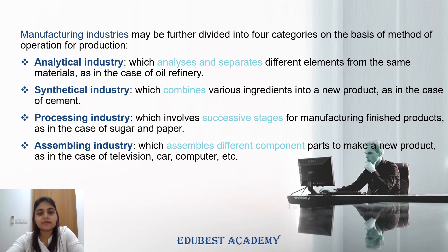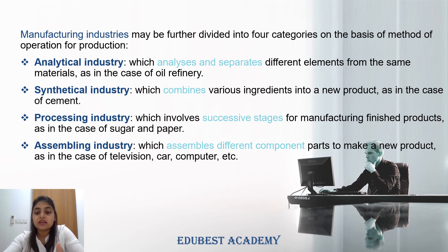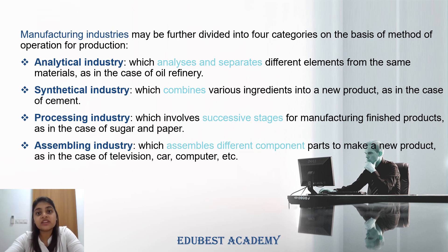The last one is assembling industry. In assembling industry, these people do not manufacture anything themselves — they take different components from different places, bring them together, and make a new product out of them. For example, television, car, computer. In a car, all the components are not made by one company — for instance, Honda's cars: the engine, steering, all these parts come from different places. Honda collects them, assembles them, and forms a new product.